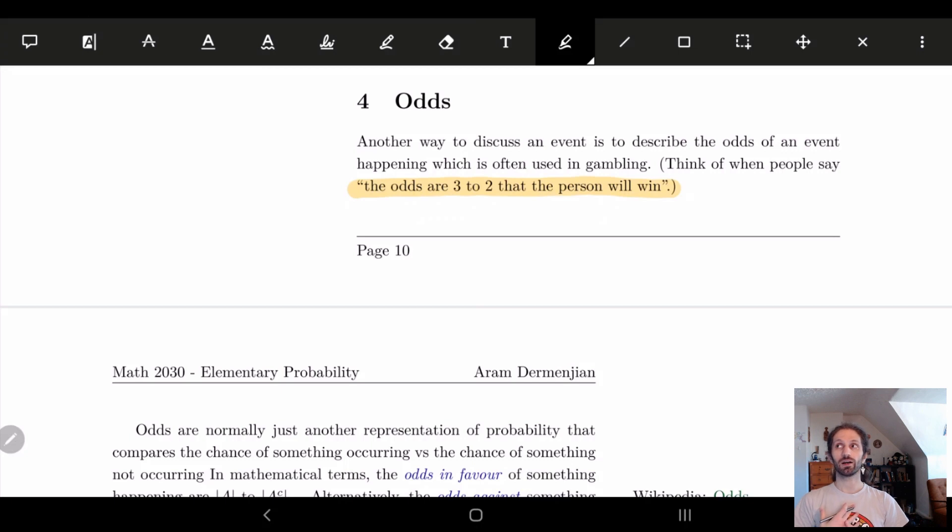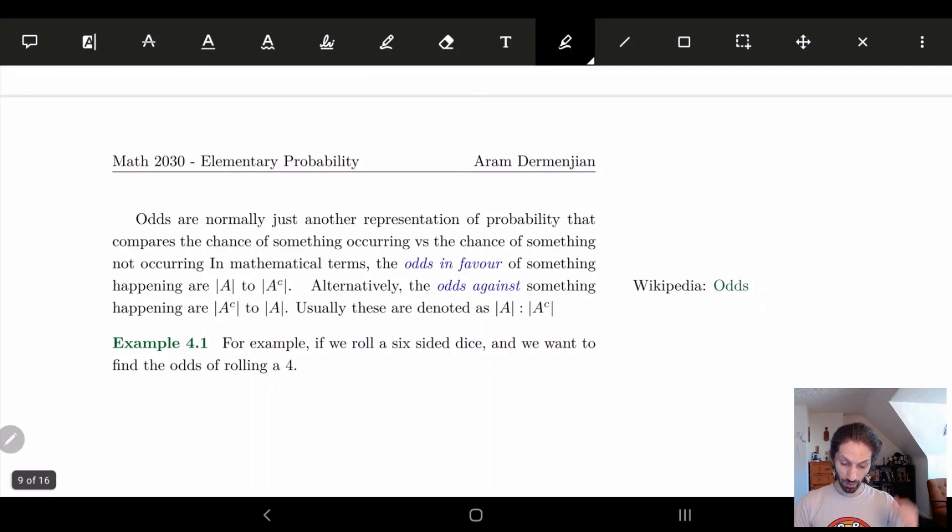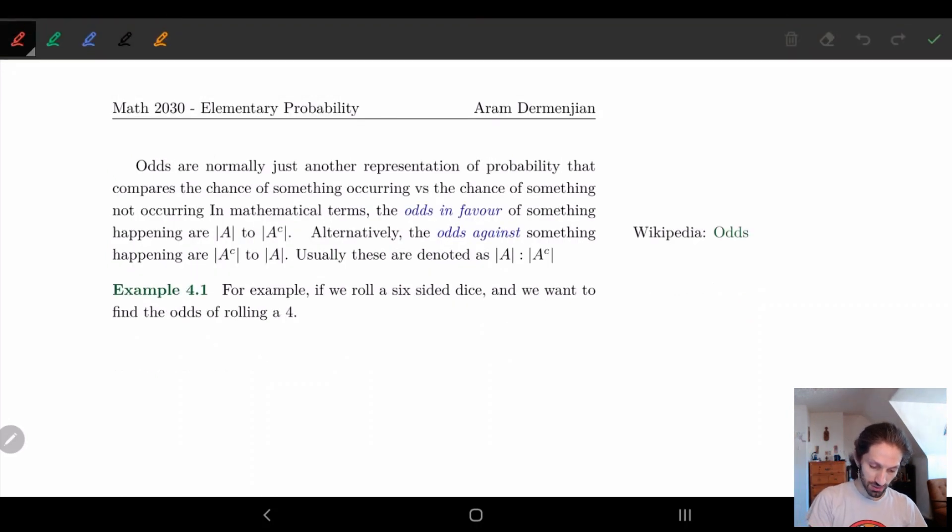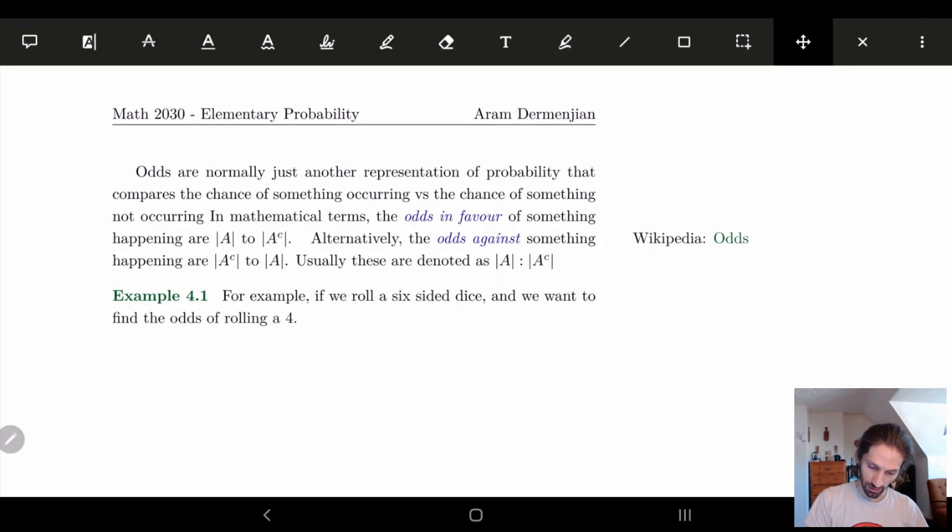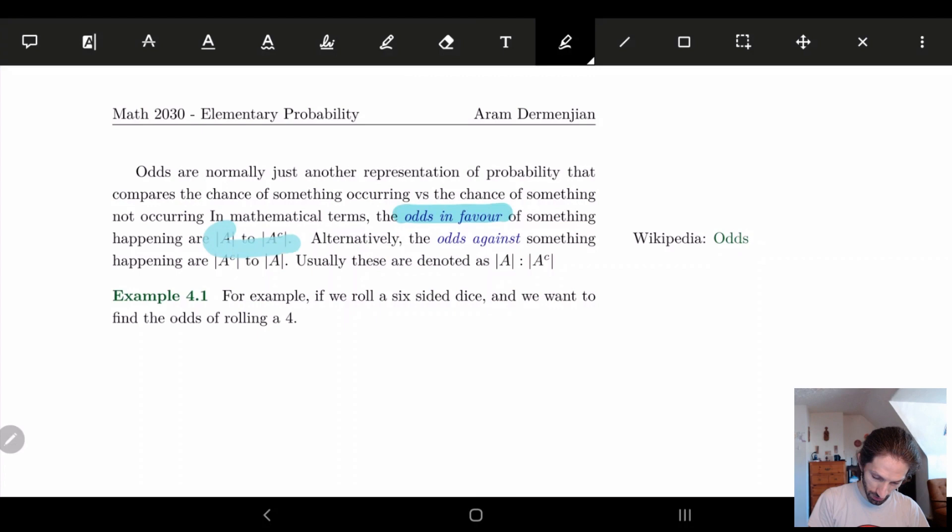So this is basically odds. If you think about it, odds is basically some ratio. Odds are normally just another representation of probability that compares the chance of something happening to something not happening. In mathematical terms, the odds in favor of something happening are said to be the size of A to the size of A complement. So think of the chance of A happening compared to the chance of A not happening. Similarly, the odds against something is the chance of A not happening compared to the chance of A happening.